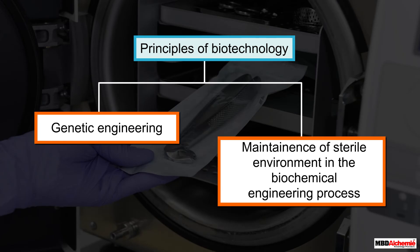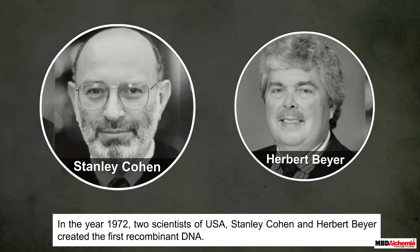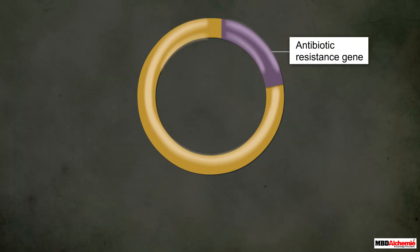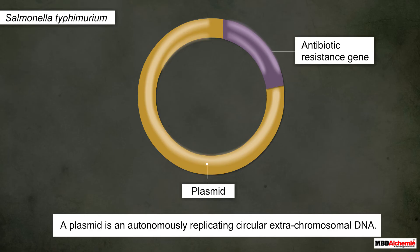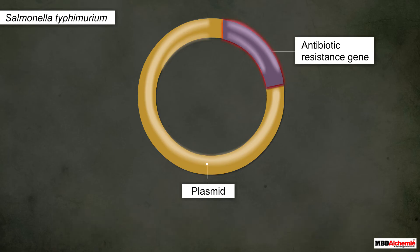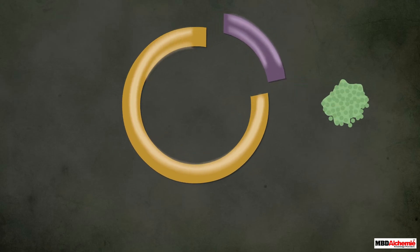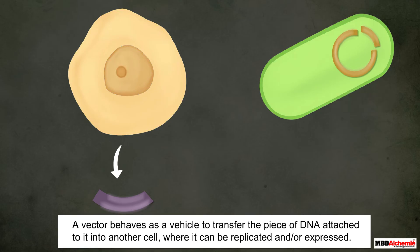In the year 1972, two scientists from the USA — Stanley Cohen and Herbert Boyer — created the first recombinant DNA. They isolated an antibiotic resistance gene from a plasmid of the bacterium Salmonella typhimurium. A plasmid is an autonomously replicating, circular, extra-chromosomal DNA. The gene responsible for conferring antibiotic resistance was isolated by cutting the desired piece of DNA from the plasmid using restriction enzymes, also known as molecular scissors.